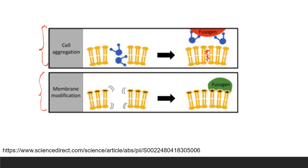The second way is membrane modification. As you can see, the fusogen changes the charge of the membrane from negative to positive. That change in charge attracts other negatively charged protoplasts or membranes toward them, and that helps cause their fusing.